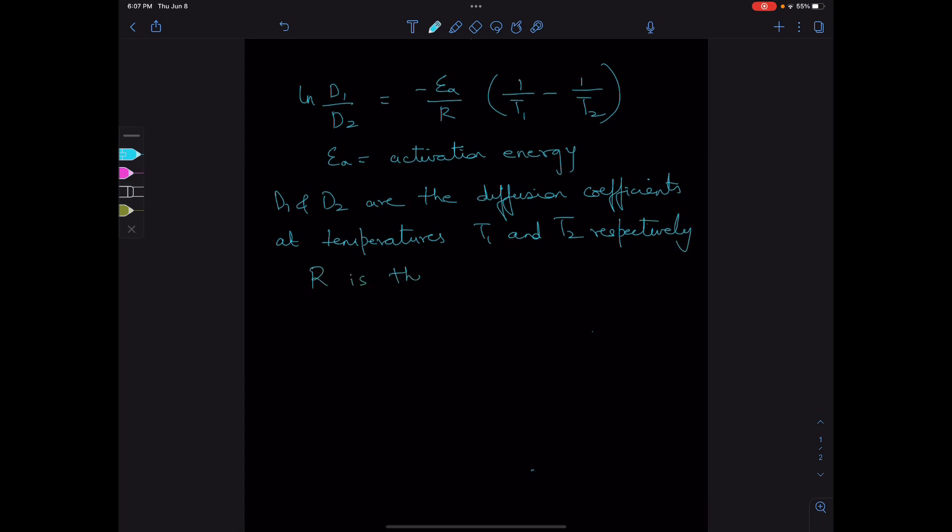R is the gas constant, and T1 and T2 are expressed in Kelvin. This is the relation between D1 and D2 at two different temperatures if they follow an Arrhenius relationship.